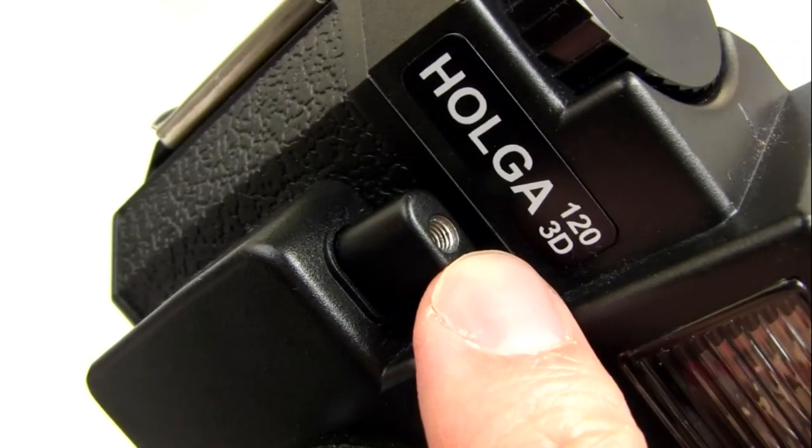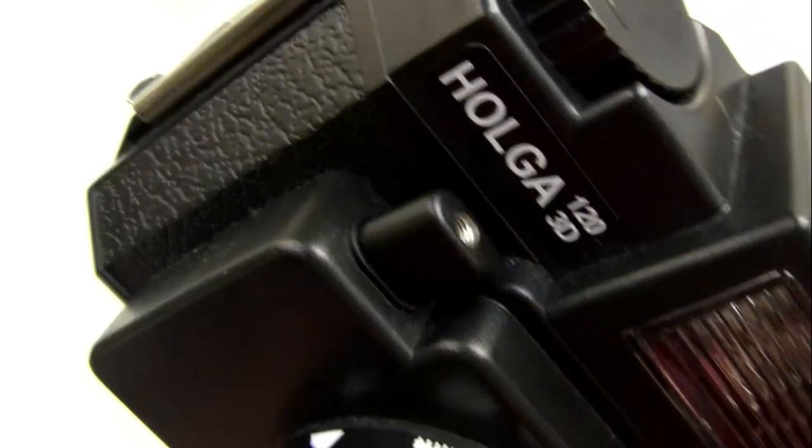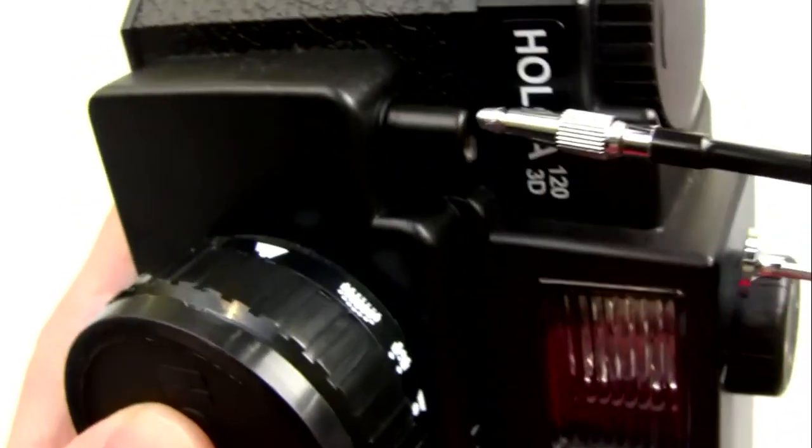If you check your camera to see if it has one of these threaded holes on the shutter release button, you can screw this into the top of it.